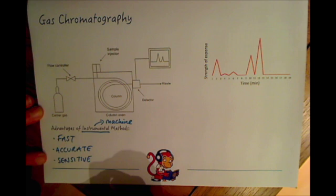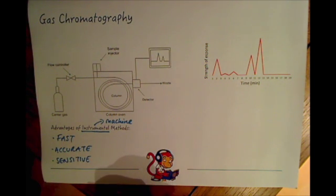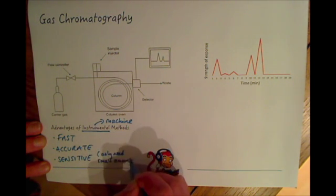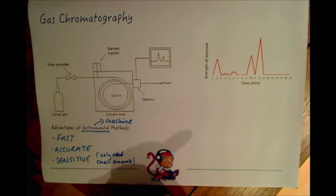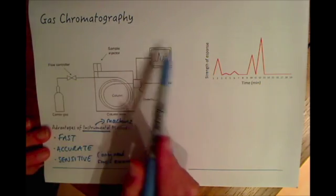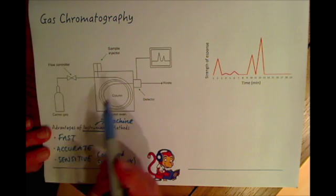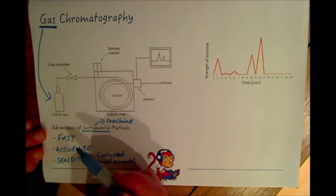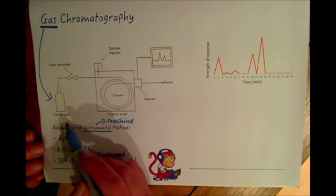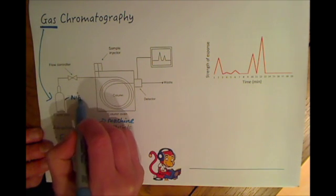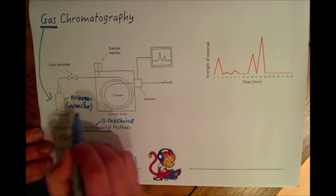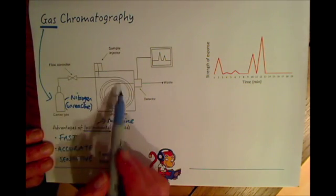That could be a three-mark question, so you need all those points. By sensitive, you mean that you only need small amounts. And with those small amounts, separating a substance would still be fast and accurate. Now, the way gas chromatography gets its name is because a gas is used to push the substance you want to separate through the machine. This gas has to be unreactive — something like nitrogen — because you don't want it to react with the sample.